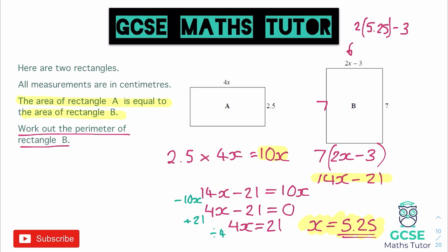So if I type that in my calculator, 5.25 multiplied by 2 comes out as 10.5, take away 3. And that gives us an answer of 7.5. So the top there is 7.5. And that's where we've substituted in our X value into that expression for the length.